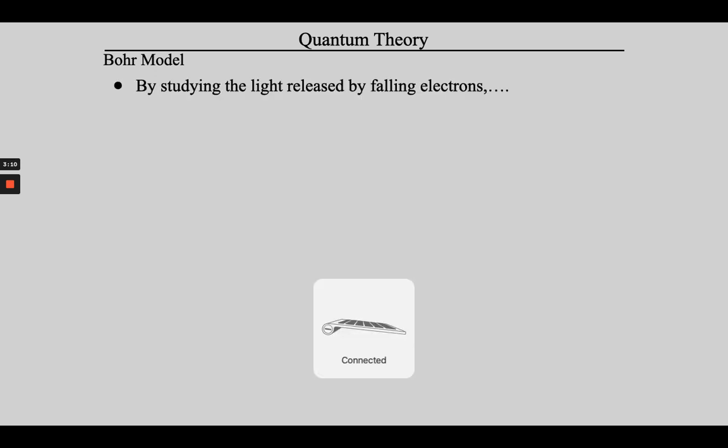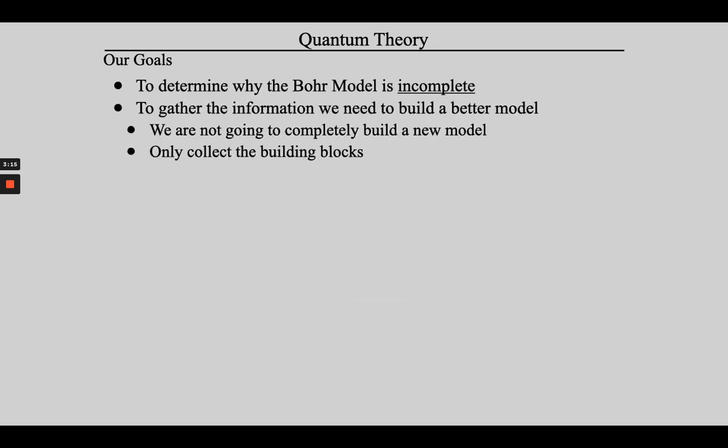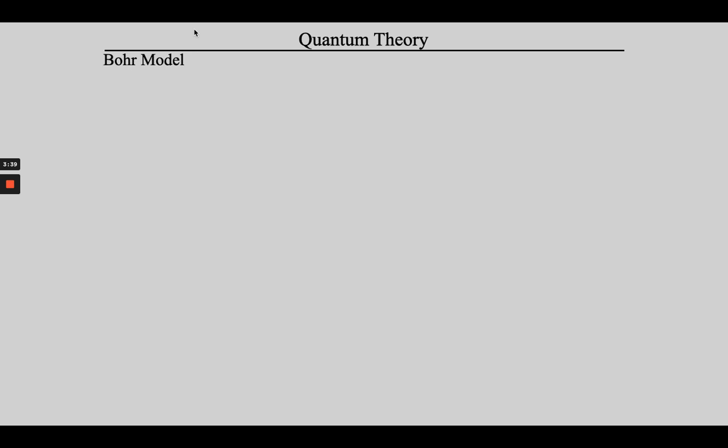Our goals for today: first, figure out why the Bohr model is not complete. Then once we've torn the Bohr model apart, we are not going to replace it. Instead, what we're going to do is gather together the parts that we do need to replace it, but we're not going to build the new model with those parts until next time. Let's go back to the flame test lab and talk a little bit about the Bohr model.